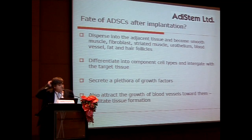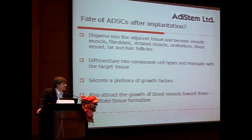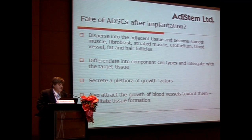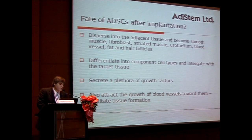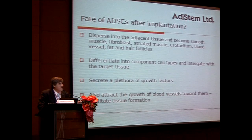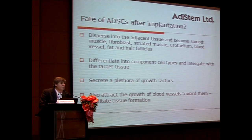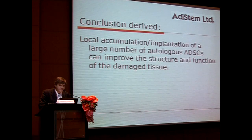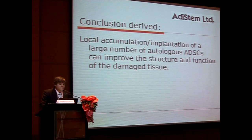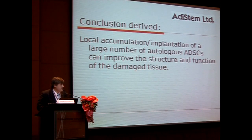So the fate of adipose-derived stem cells, or mesenchyme stem cells, after implantation — the questions are: do they disperse into adjacent tissue and become various cell types? Do they differentiate into component cell types and integrate with the target tissue? Or do they secrete a whole lot of growth factors that cause the effect? Do they stimulate other local progenitors to cause healing, and attract blood vessels? The conclusion derived so far in the literature suggests that local accumulation and implantation of a large number of mesenchyme stem cells can improve the structure and function of damaged tissue. So really, they're a repair cell.